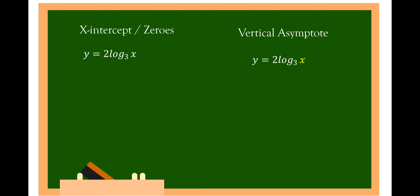For y is equal to 2 log of x to the base of 3, let y equal to zero, then transform into exponential form. We have 3 raised to 0 equal to 2 log of x to the base of 3. From the power law, the 2 becomes the exponent of x, so we have 3 raised to 0 is equal to x squared. Since 3 raised to 0 is 1, x squared is equal to 1. Taking the square root of both sides, x is equal to 1. For the vertical asymptote, equate x to zero, so x is equal to 0.